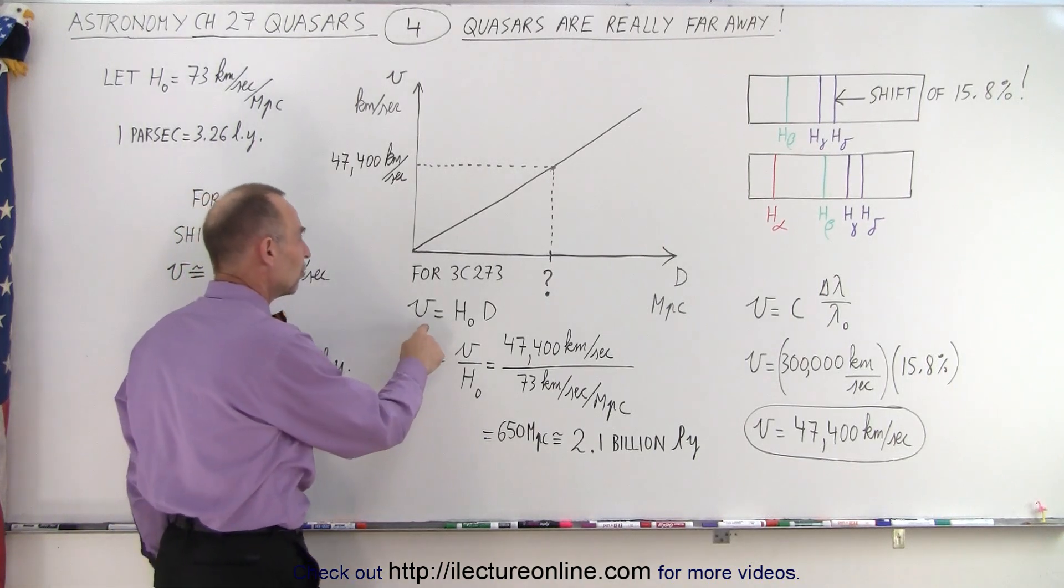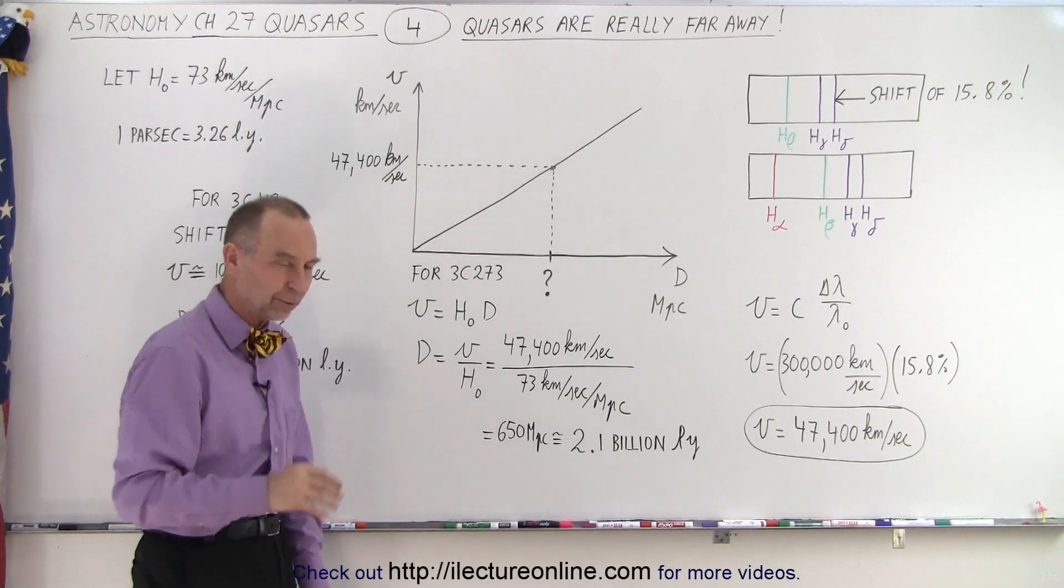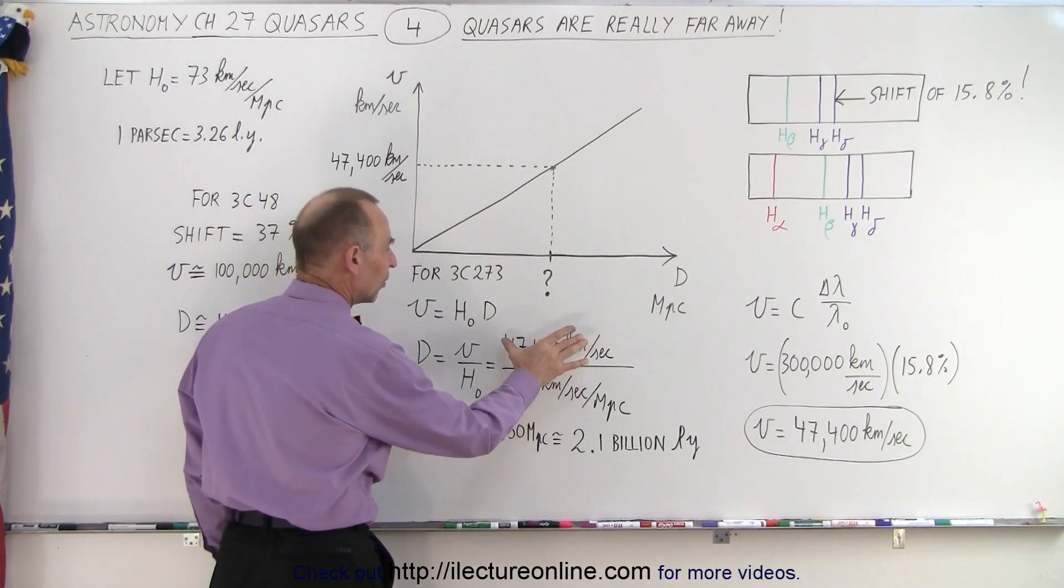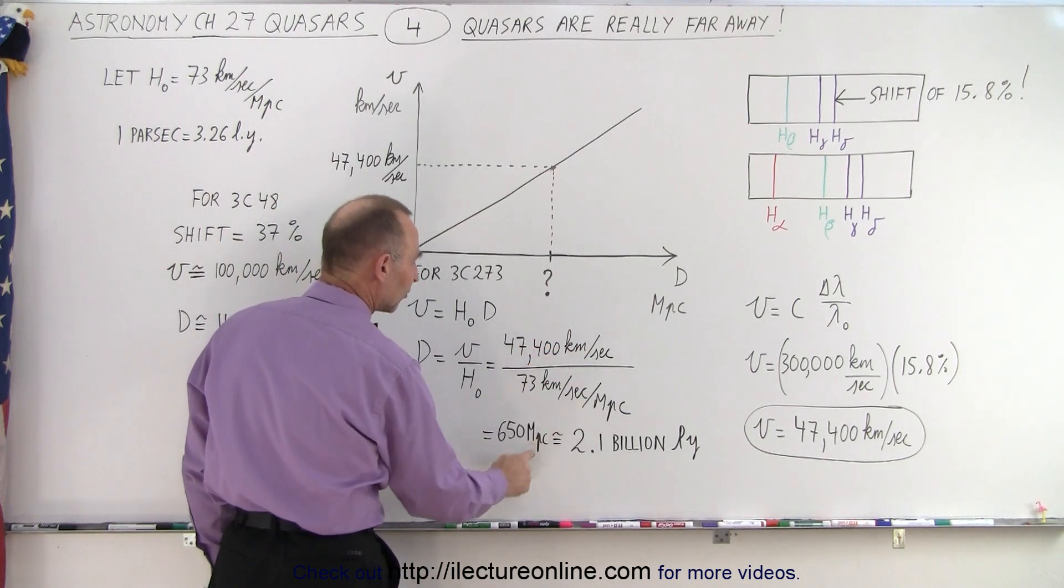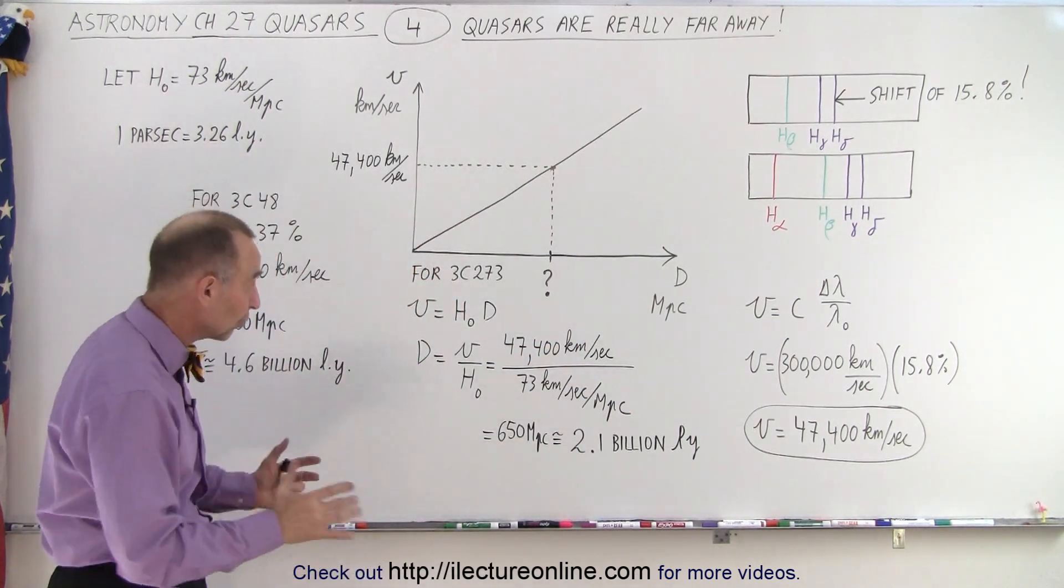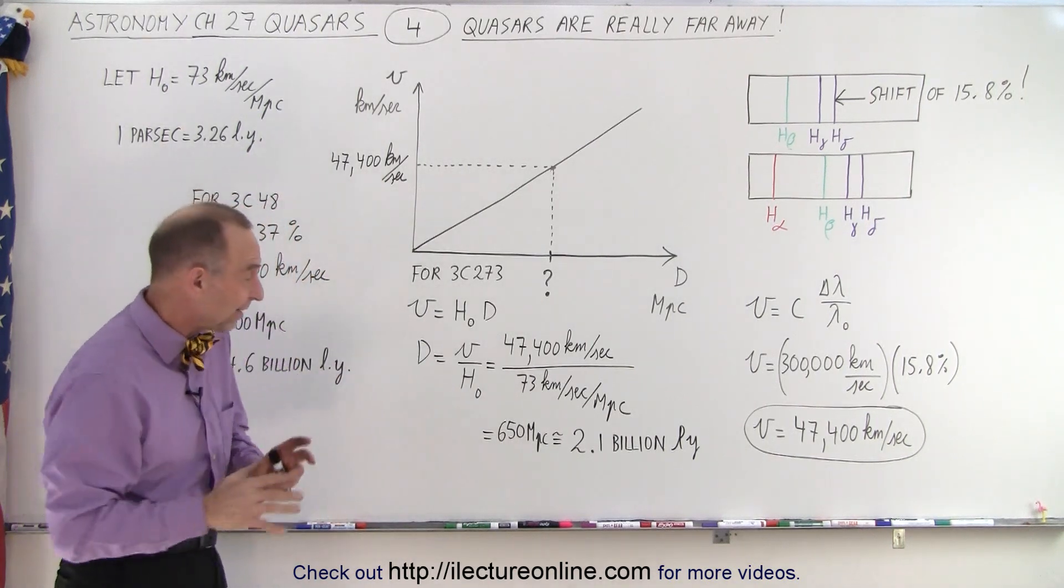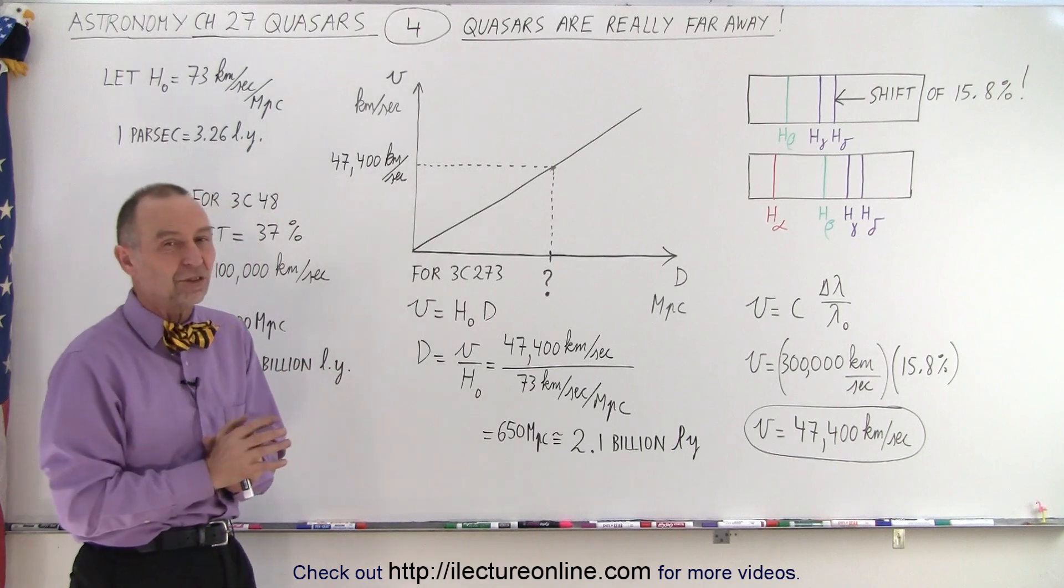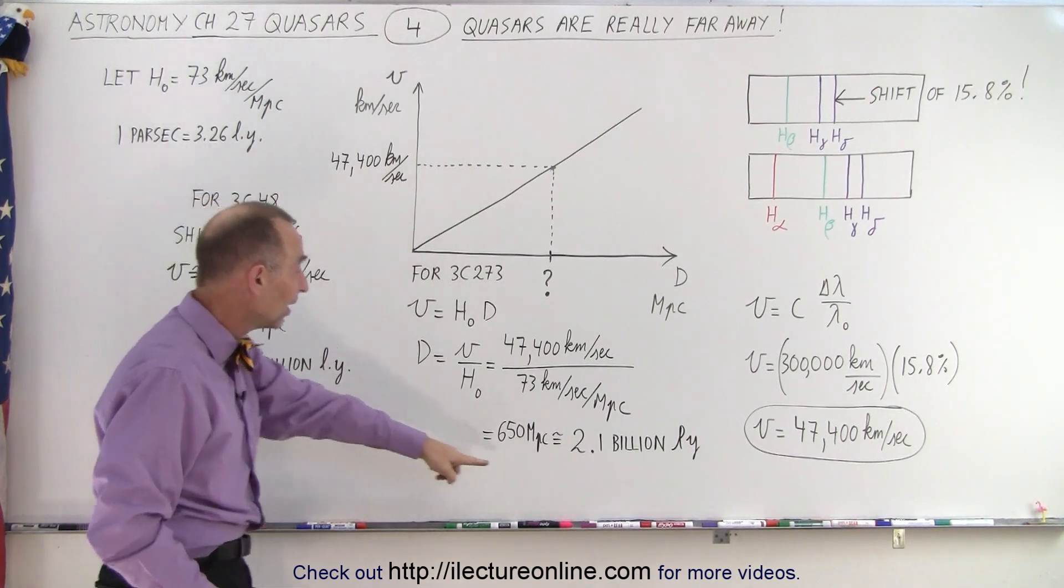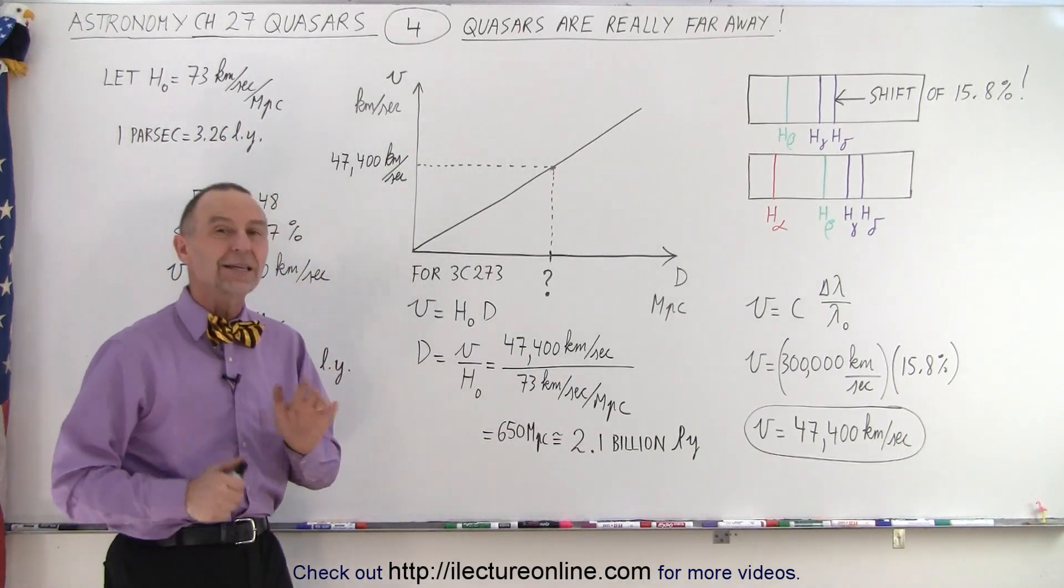Let's say that we take a Hubble constant at 73 kilometers per second per megaparsec. We place that in our equation, that the velocity is equal to the Hubble constant times d, kind of like the y equals mx plus b equation. We solve that equation for d, we take the velocity, divide it by the Hubble constant, and we get the distance to the object in megaparsec. It turned out that 3C273 was at a distance of about 650 megaparsecs, and since one parsec is 3.26 light years, that equated to a distance of about 2.1 billion light years.